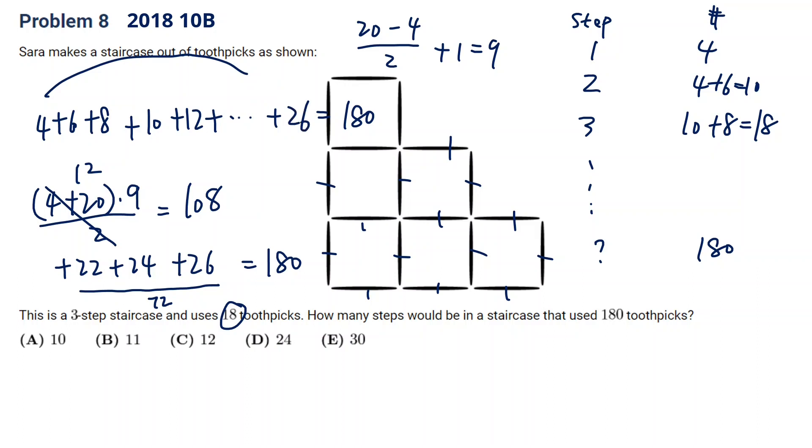And from 26 to 4, it's 26 minus 4 divided by 2 plus 1. So in total, there are 12 numbers, which means it's 12 steps.